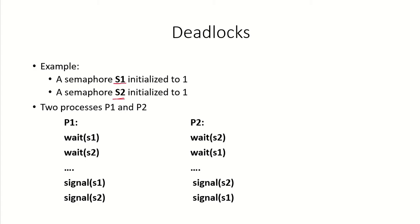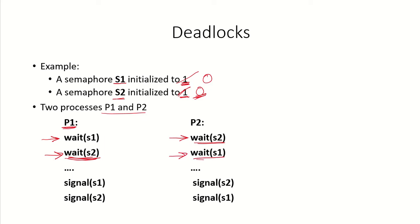Consider two semaphores s1 and s2, both initialized to 1, and two processes p1 and p2. P1 executes wait(s1), making s1 equal to 0. Then a context switch occurs and p2 executes wait(s2), making s2 equal to 0. P1 resumes and tries to wait on s2, but s2 is currently 0 so it waits. Then p2 tries to wait on s1, but s1 is held by p1.